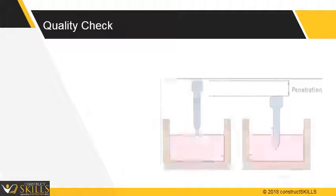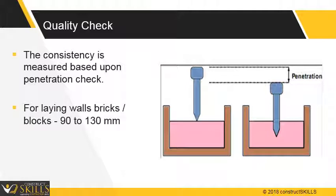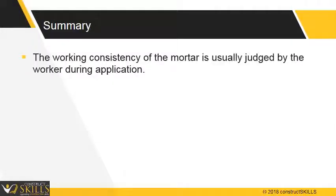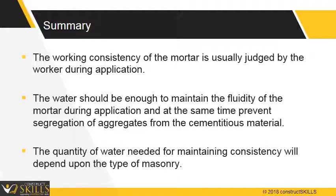Quality Check: Consistency can be measured based on a penetration check. For laying wall bricks or blocks, the penetration should be 90 to 130 mm. For filling cavities, it should be 130 to 150 mm. The working consistency of the mortar is usually judged by the worker during application. The water should be enough to maintain the fluidity of the mortar during application, and at the same time prevent segregation of aggregates from the cementitious material.